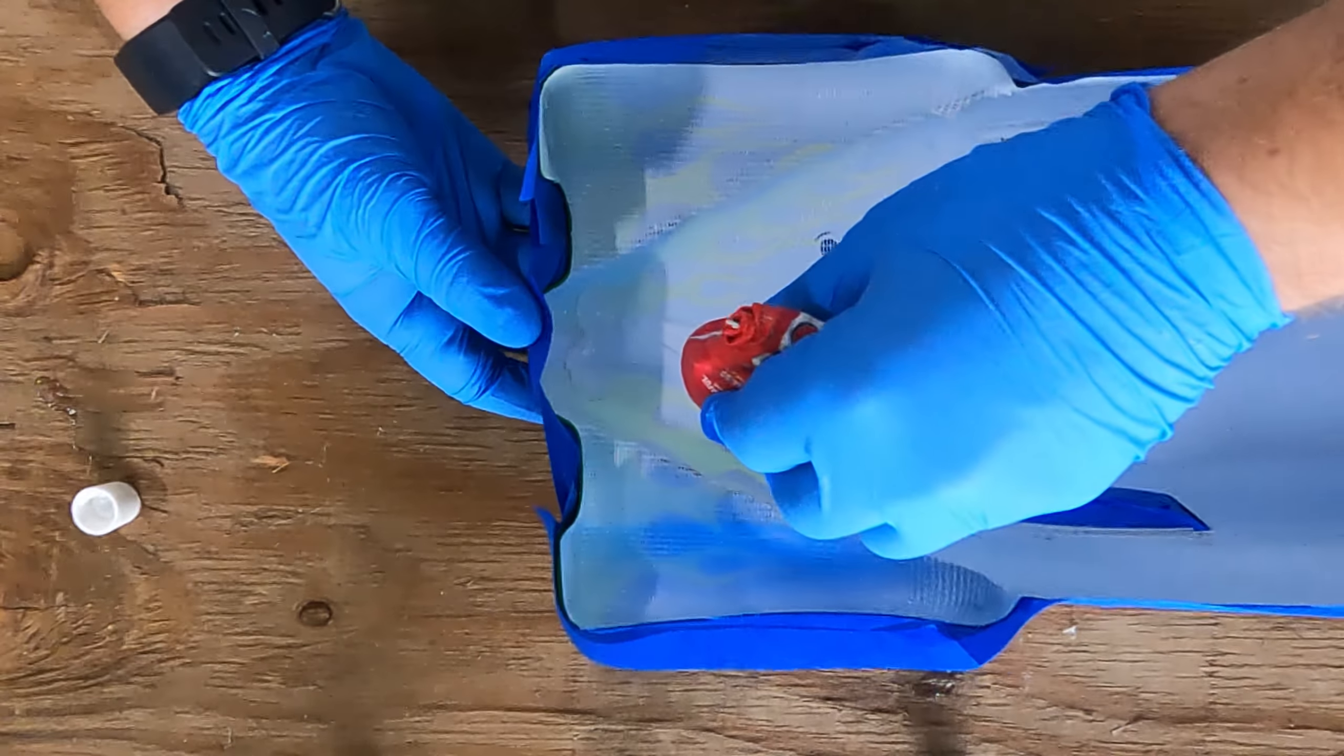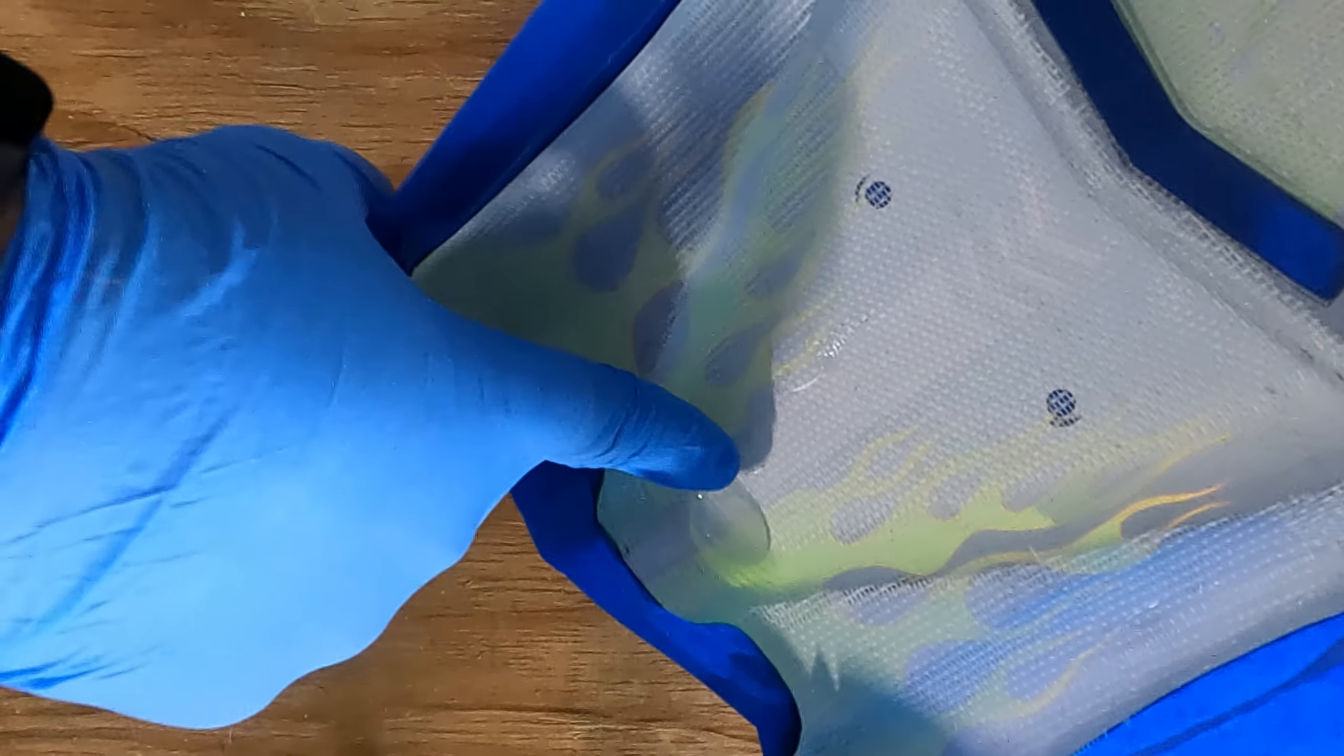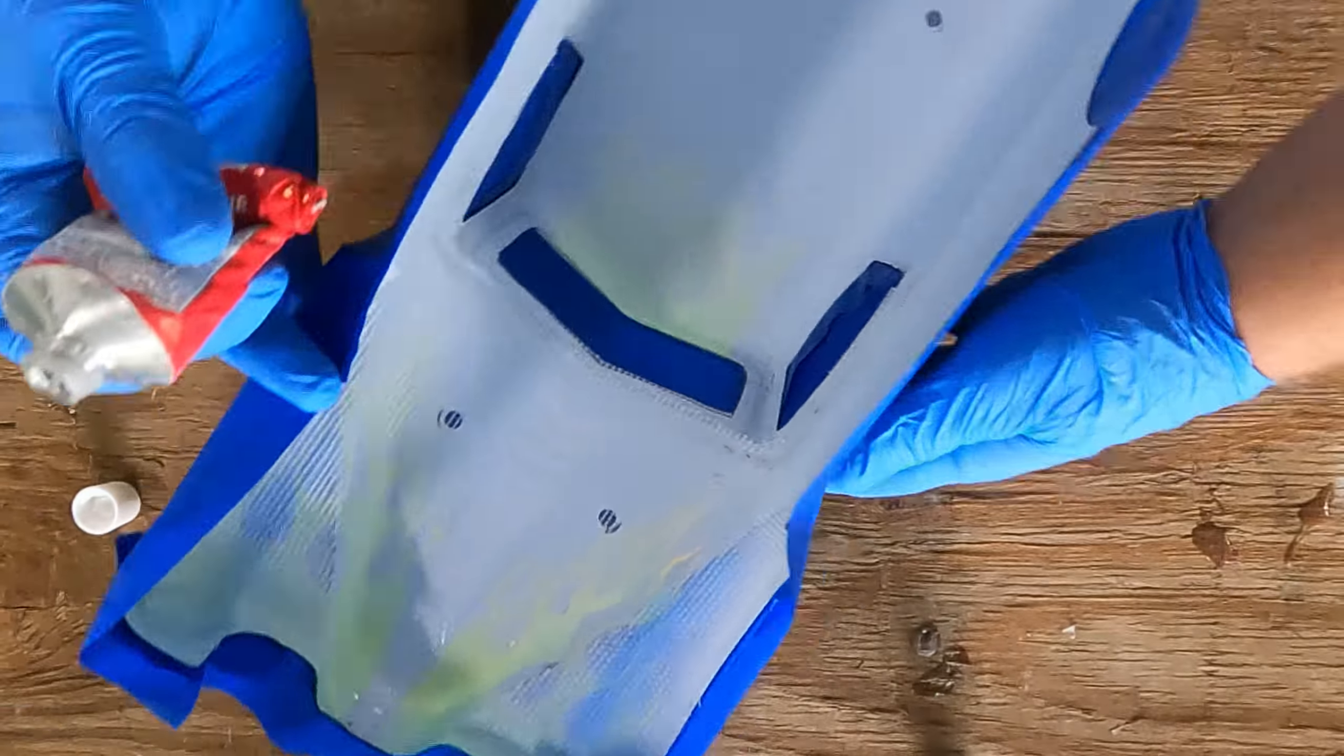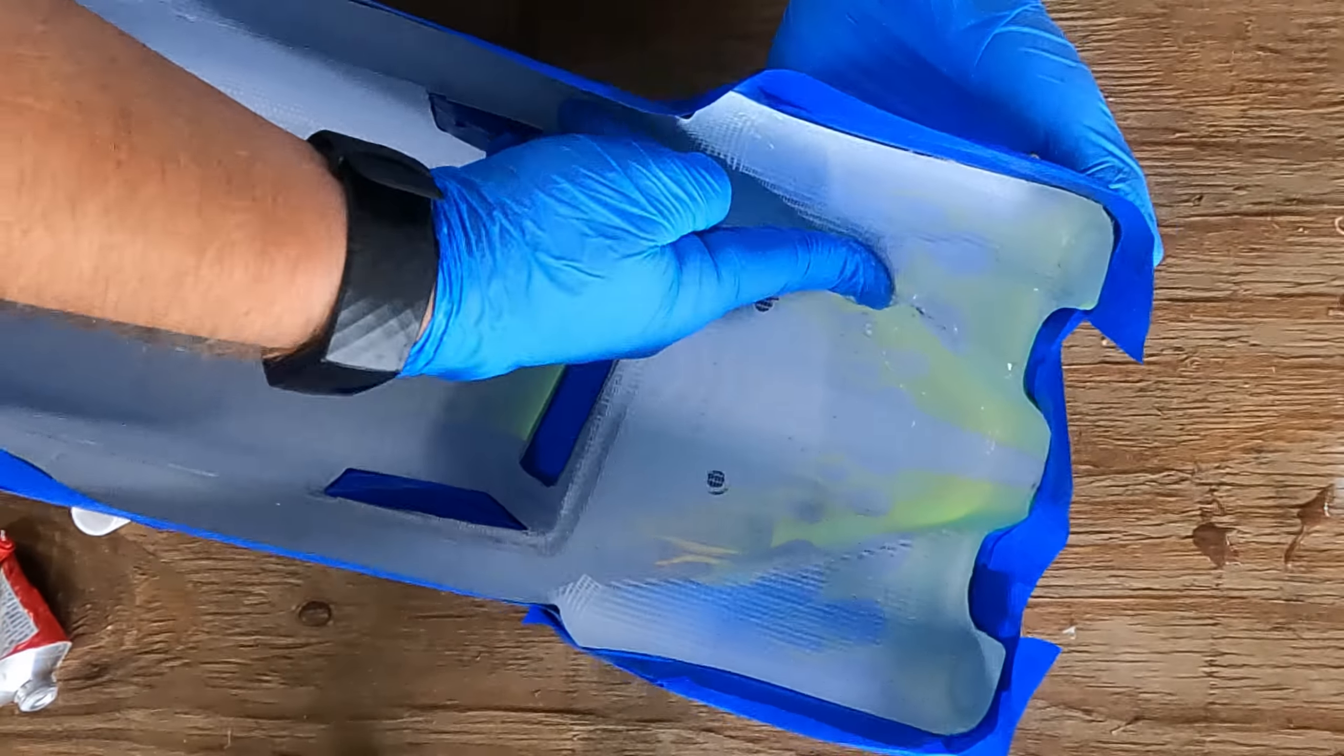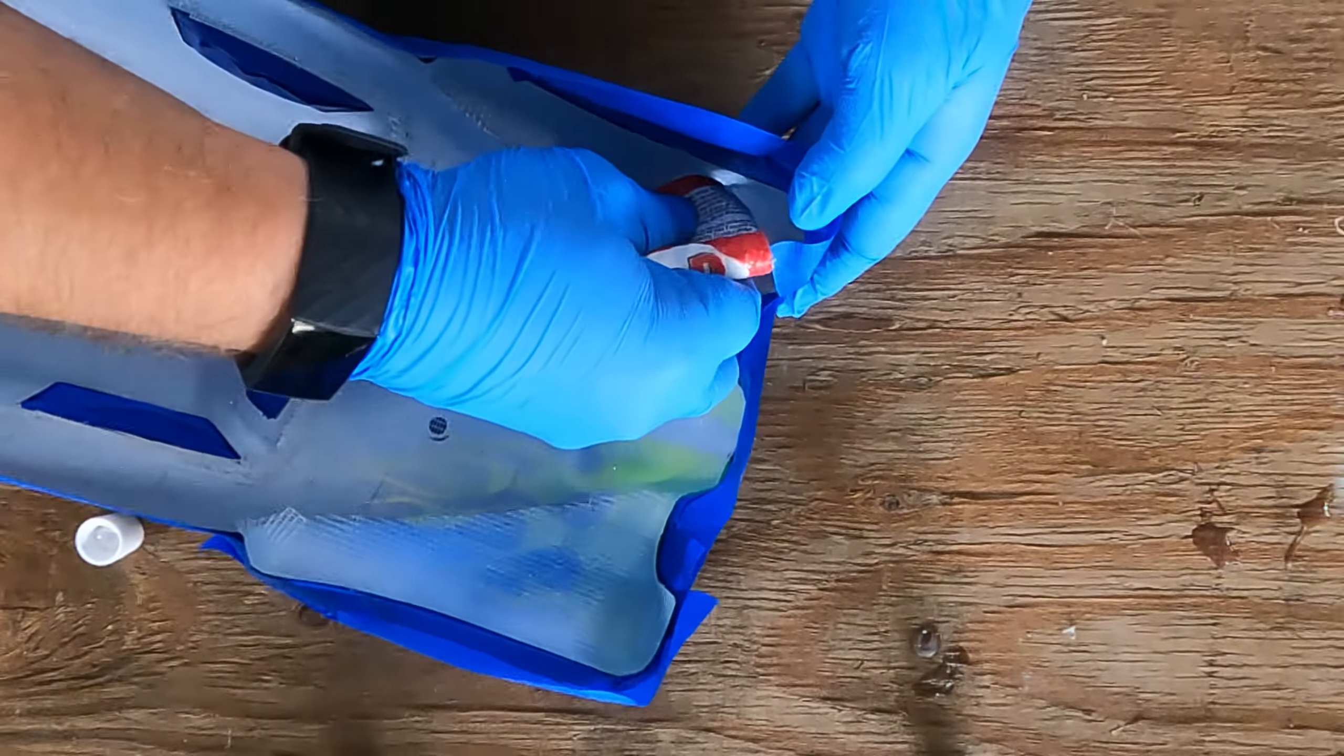You don't want to dump the whole tube on because this stuff gets very tacky. If you're familiar with working with caulk or paint or drywall mud, anything like that, if you start playing with it too much and it starts setting up on you, it's just going to make things more difficult. I'm just going to go ahead and put a little bit up in this front corner. You don't want it to be super goopy thick. You just want to make sure you got a nice even coat on it.